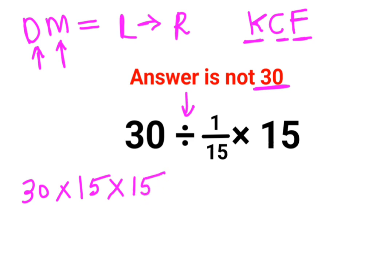So here what we get is 30 times 15 which gets you 450 multiplied by 15, which gets us 6,750.